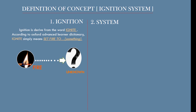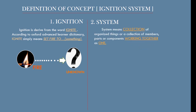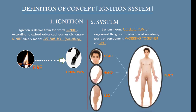According to the Oxford Advanced Learners Dictionary, ignite simply means to set fire to something. At this stage we know that we have fire, and fire is to be set to something. Now the second word is 'system.' System means a collection of organized things, or a collection of members, parts, or components working together as one or as a whole. An example is the human body — it consists of the head, the hands, the legs, and so on, but when all parts come together it is referred to as the body. The body is a system.